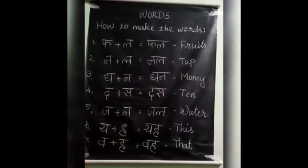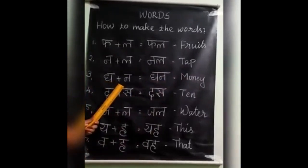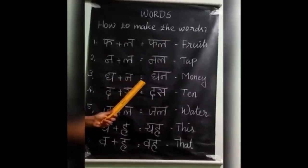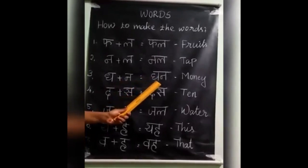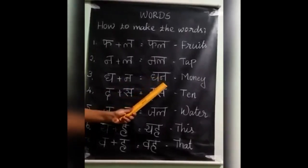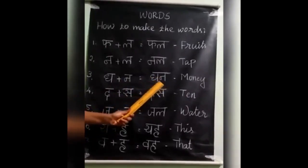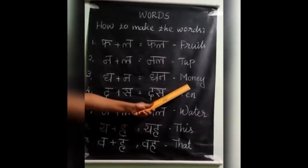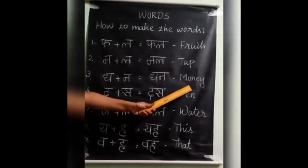Ok children, are you clear? The next one. Dha plus na equal to — how to pronounce this? Dhan. Dhan means money.